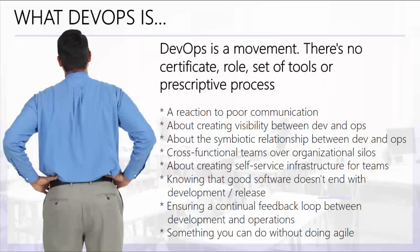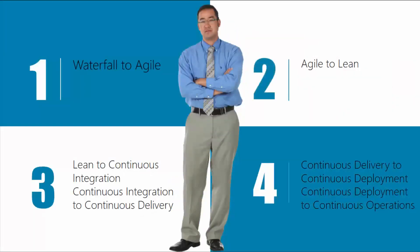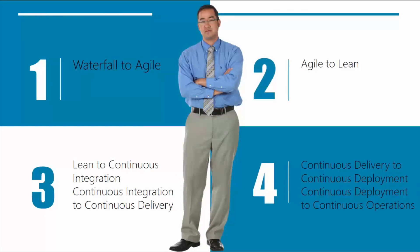And of course, you can't do this without agile development. We've talked about waterfall and agile concepts. Briefly, the evolution goes: waterfall to agile, agile to lean, lean to continuous integration and continuous delivery, and then continuous delivery to continuous deployment to operations. All of these areas lean from waterfall through agile, lean, and into continuous delivery.